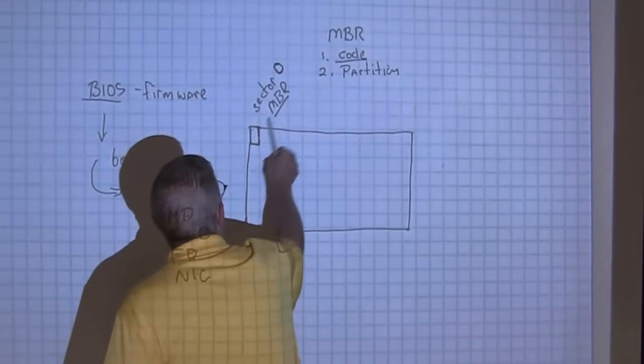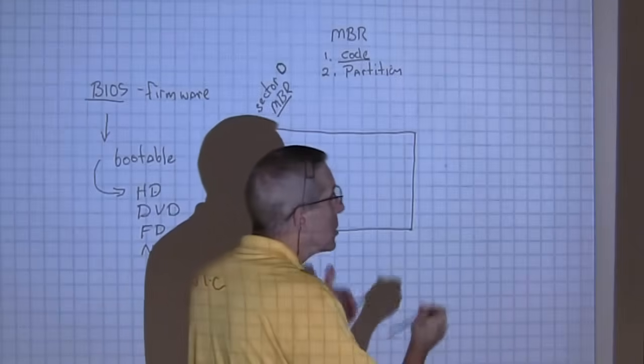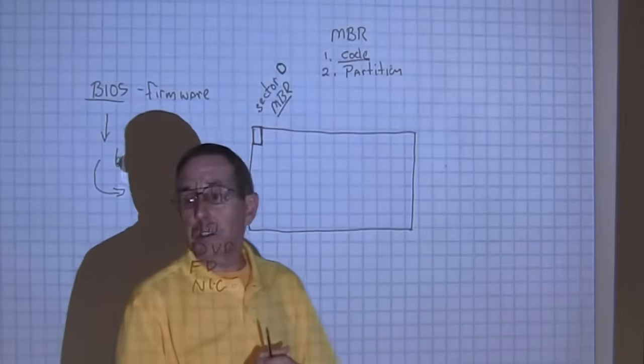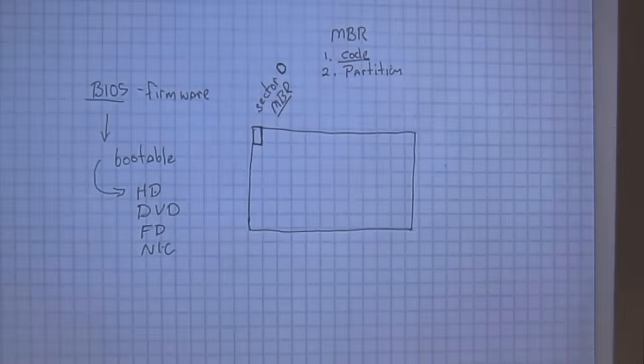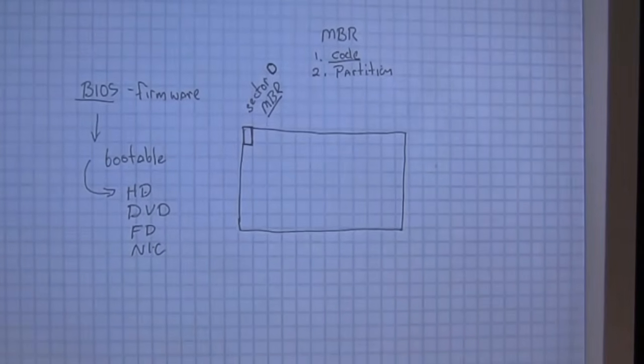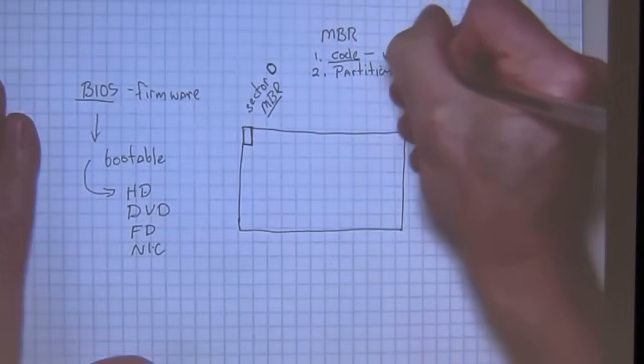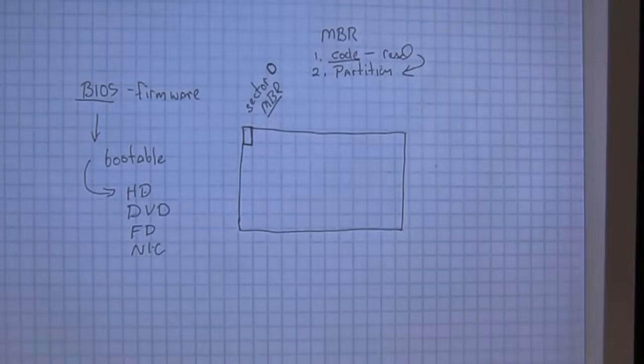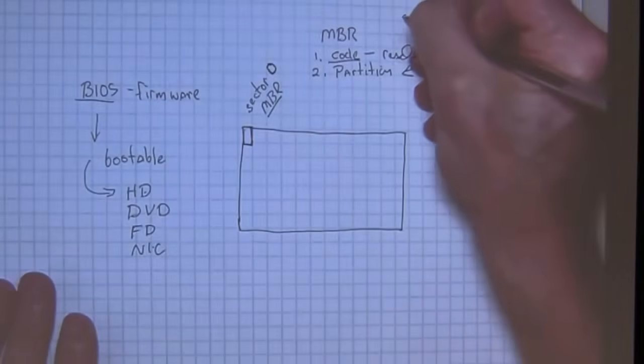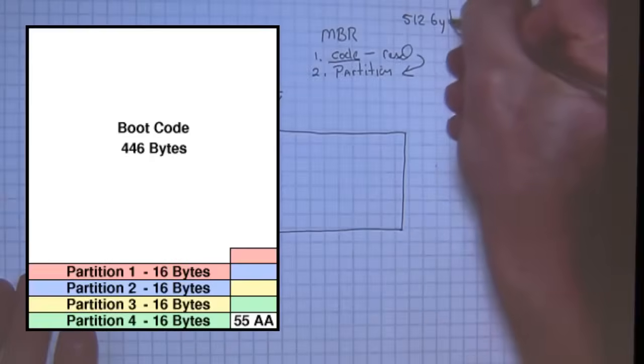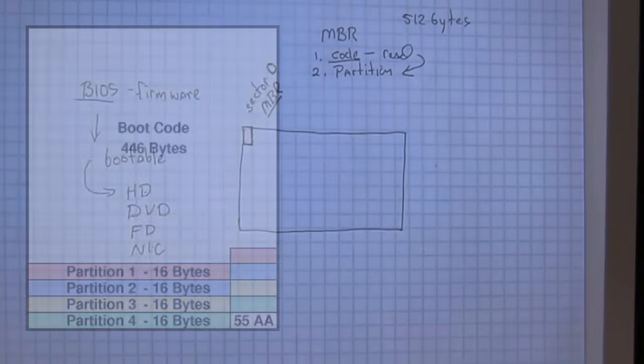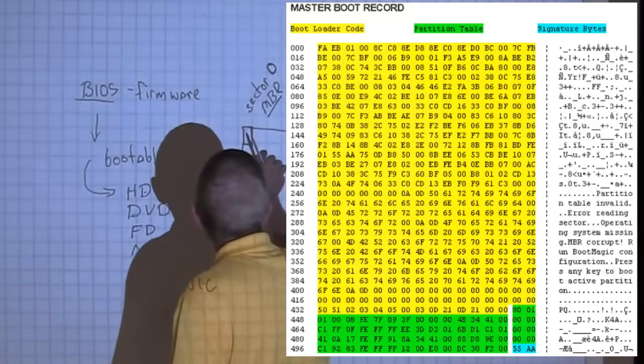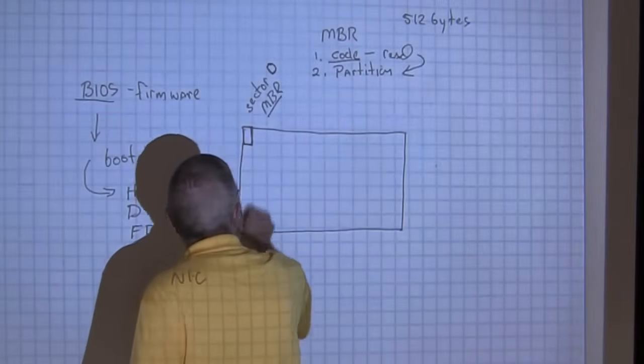When it finds the MBR, it runs and executes the code that is in there. That executable code reads the partition and says, oh, I see how they partitioned this hard drive. They just created one big C drive. This code reads the partition table. This sector is only 512 bytes. It's not a lot of data.